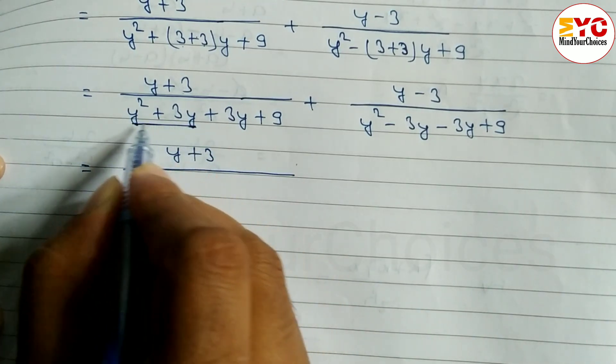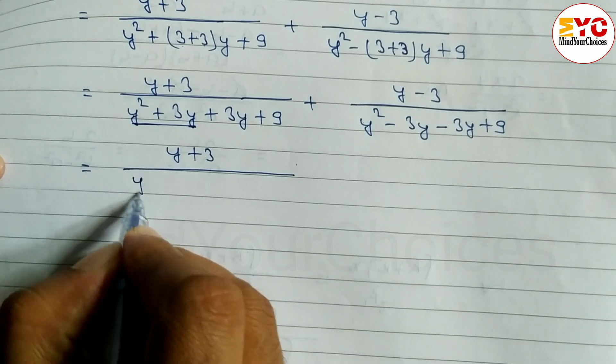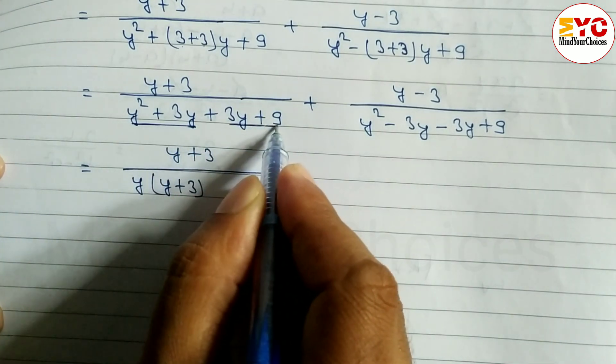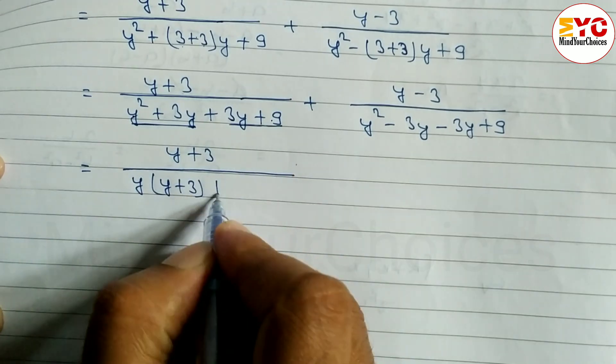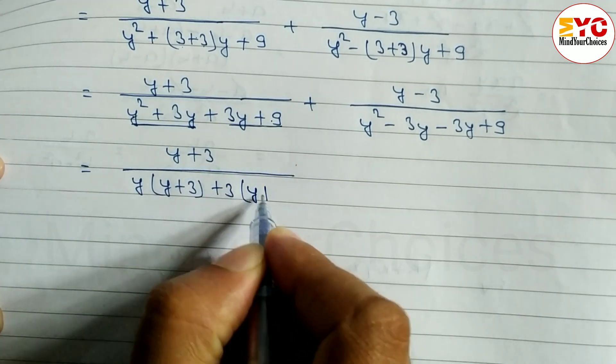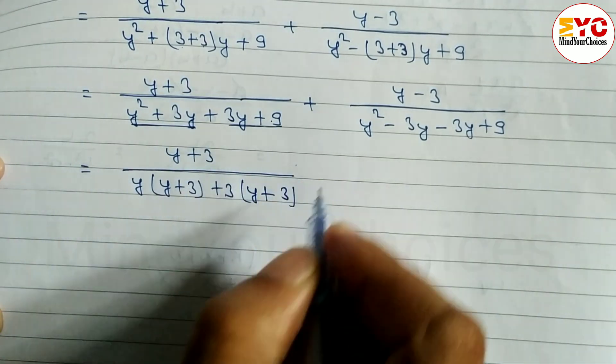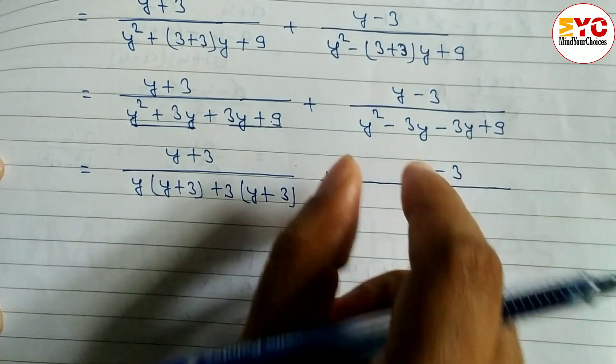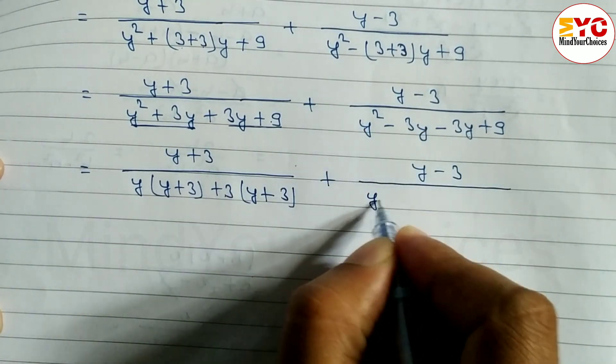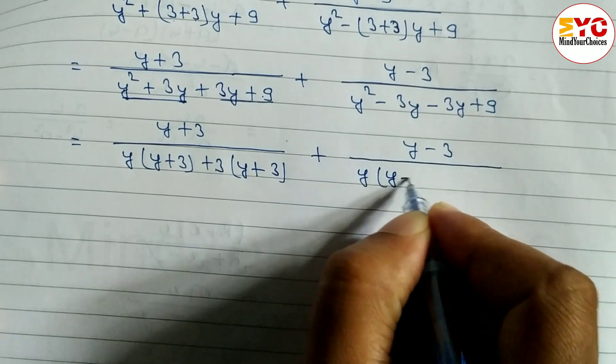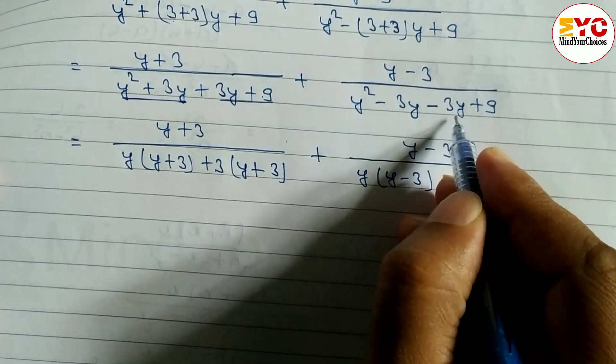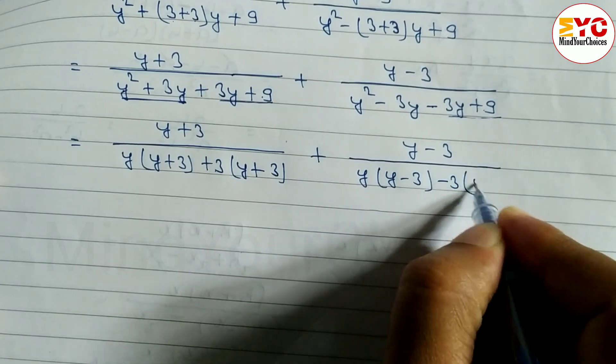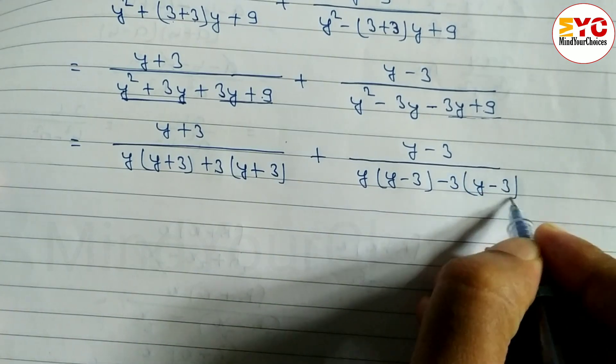After this, y plus 3 stays the same. From the first two terms we take y common, leaving y plus 3. From the next two terms, from 3 and 9, we take 3 common, leaving y plus 3 again. Same process on the other side with y minus 3.